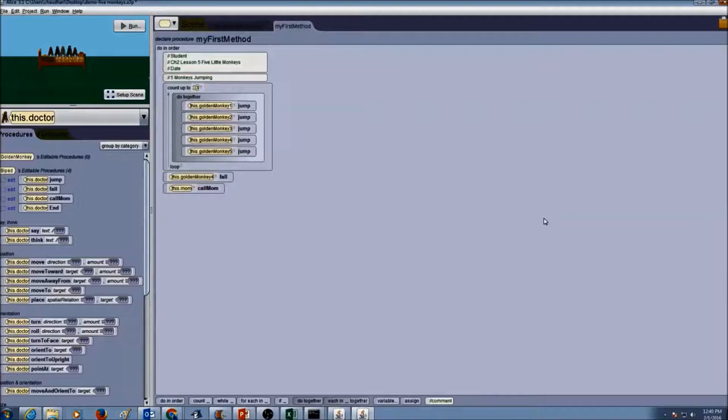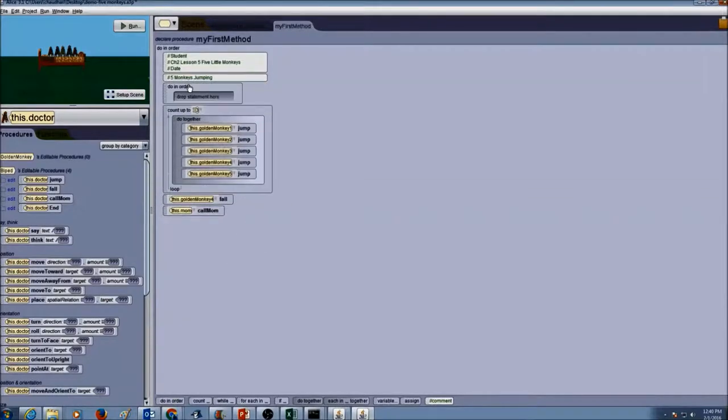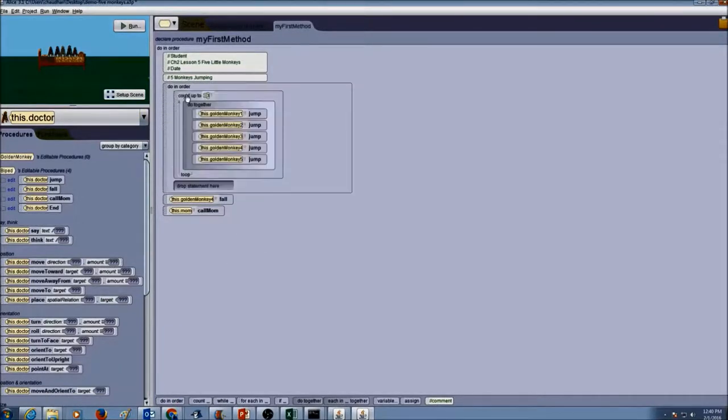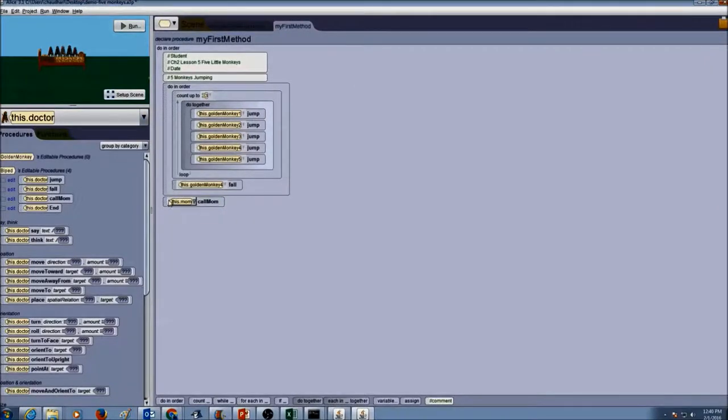Now here is my demo program for 5 little monkeys. I am going to quickly show you how to copy and paste these instructions because all of this program is repeating the jump, repeating the fall, repeating the call mom. So the first thing that I am going to do is go to my control structures and drag and drop to win order. I am going to put my count inside it for the jump, the fall procedure, and call mom procedure. Don't forget to add a comment that says 5 monkeys jumping.